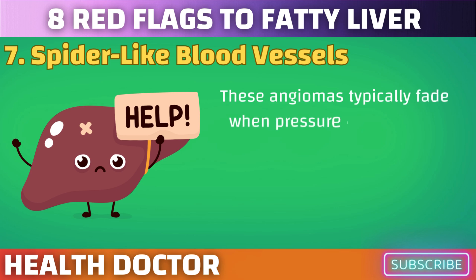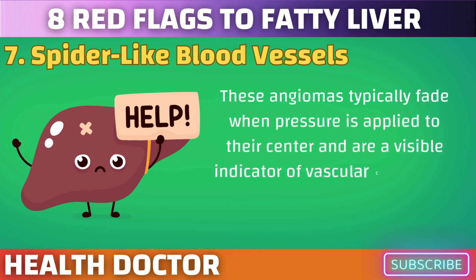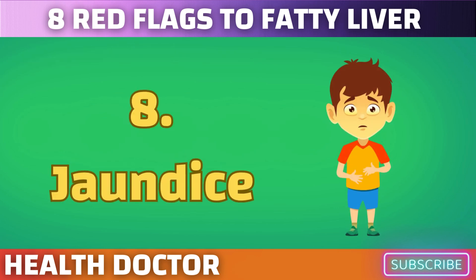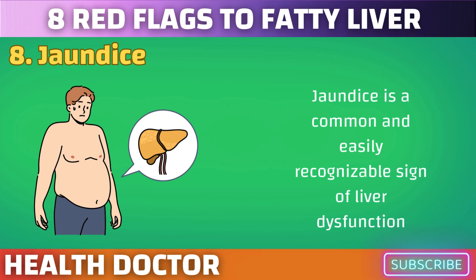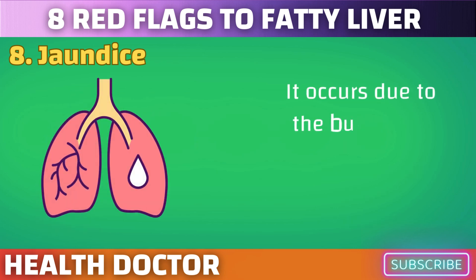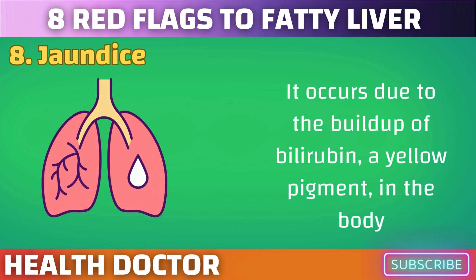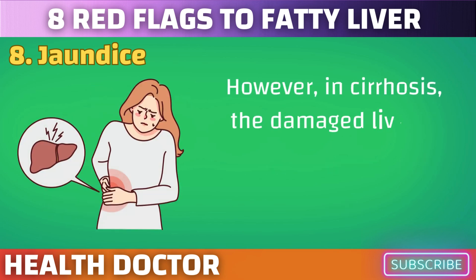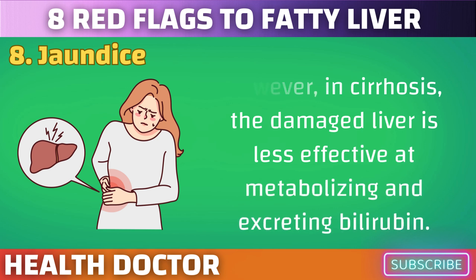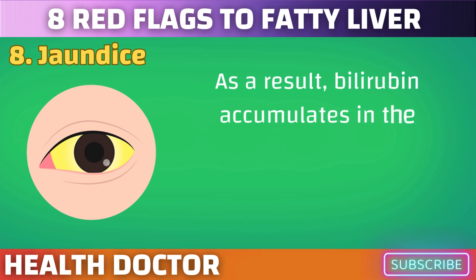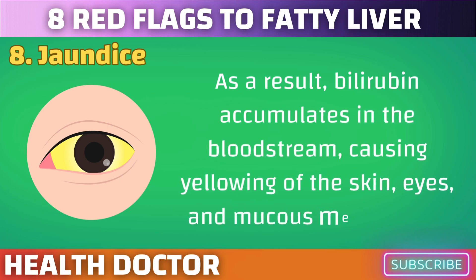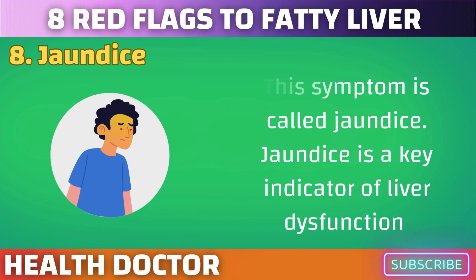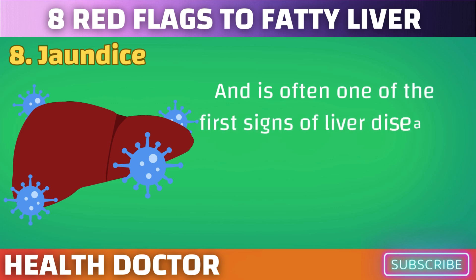Spider angiomas typically fade when pressure is applied to their center and are a visible indicator of vascular changes in the skin associated with fatty liver disease. Jaundice is a common and easily recognizable sign of liver dysfunction. It occurs due to the buildup of bilirubin, a yellow pigment, in the body. The liver normally processes bilirubin and excretes it in bile. However, in cirrhosis, the damaged liver is less effective at metabolizing and excreting bilirubin, causing it to accumulate in the bloodstream and leading to yellowing of the skin, eyes, and mucous membranes. Jaundice is a key indicator of liver dysfunction and signals the need for medical evaluation and intervention.